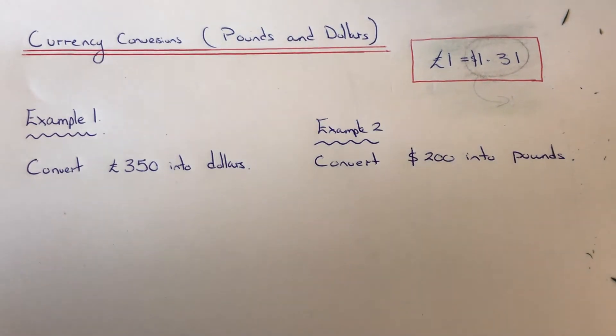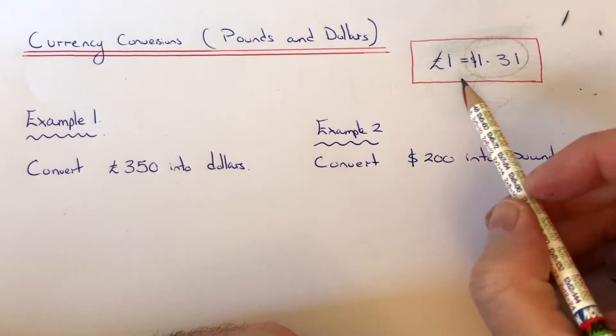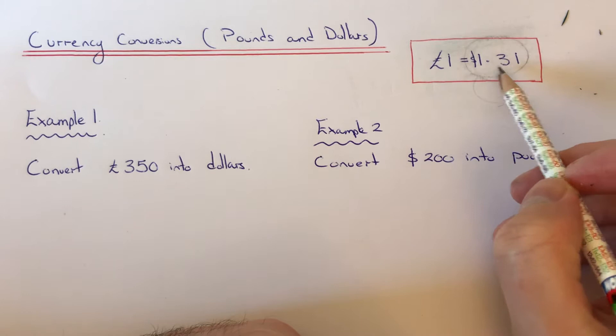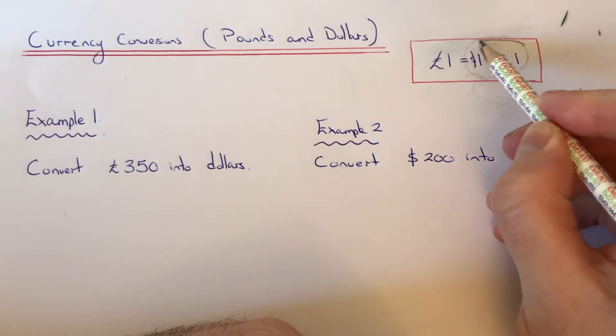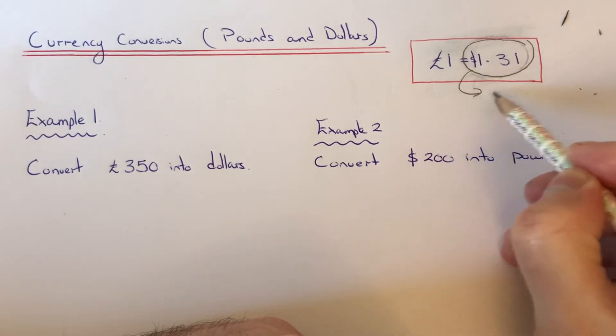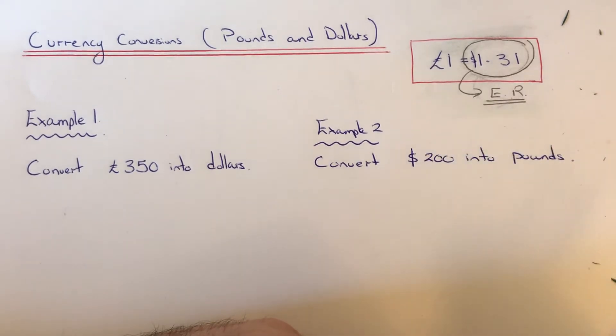Hi guys, welcome back. This is Maths 3000. Today I'm going to show you how to convert between pounds and dollars. To do this, you'll need to know the exchange rate between pounds and dollars. So at the moment today, one pound is equal to one dollar thirty-one.